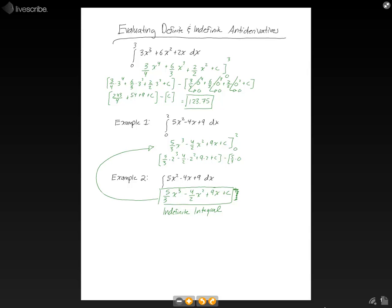5 thirds times 0 to the third minus 4 halves times 0 to the second plus 9 times 0 plus c. When we do our subtraction, we'll get 40 over 3 minus 8 plus 18, which is going to equal 23.33. And now we have solved our definite integral.